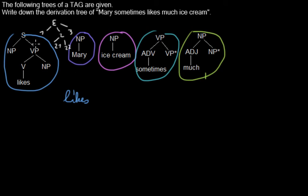In this tree 'likes', we had performed a substitution of the node Mary, of the tree named Mary. We had performed a substitution of the node Mary and we had done this in this node. And this node, well, it's the first daughter node of the root node, so it has the Gorn address one.